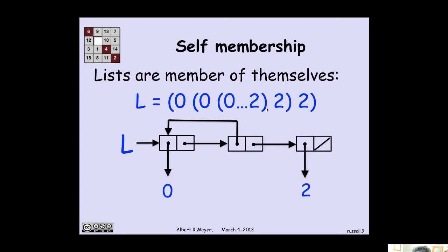And if you sort of expand it out, L is this list that begins with 0. And then its second element is a list that begins with 0. And the second element of that list is a list that begins with 0, and so on. And then the third element of L is 2. And the third element of the second element of L is 2, and so on. It's an interesting, infinite nested structure that's nicely represented by this finite circular list.